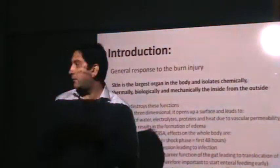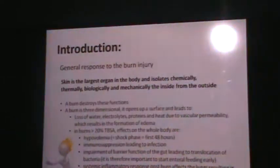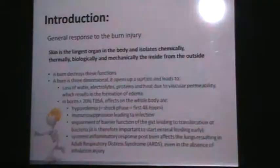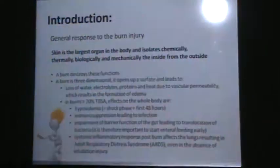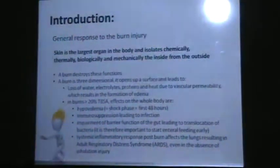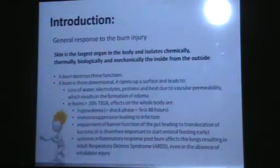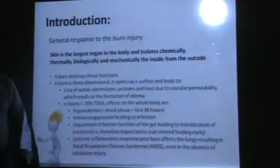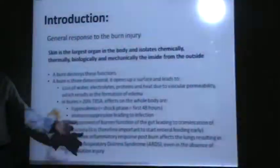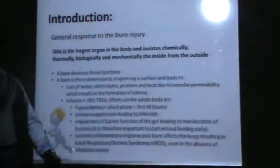Adult respiratory distress syndrome occurs because of too much inflammation — the respiratory system stops and the patient may have episodes of not being able to breathe at all, going back and forth. This is not related to any direct inhalation injury; it can happen just because of the inflammatory reaction.